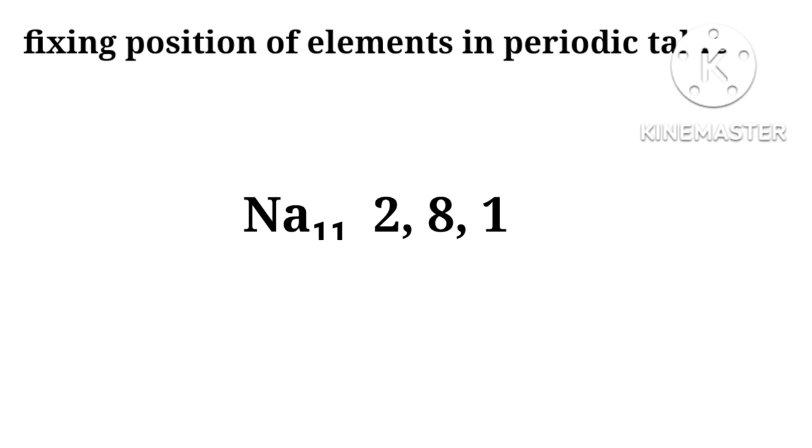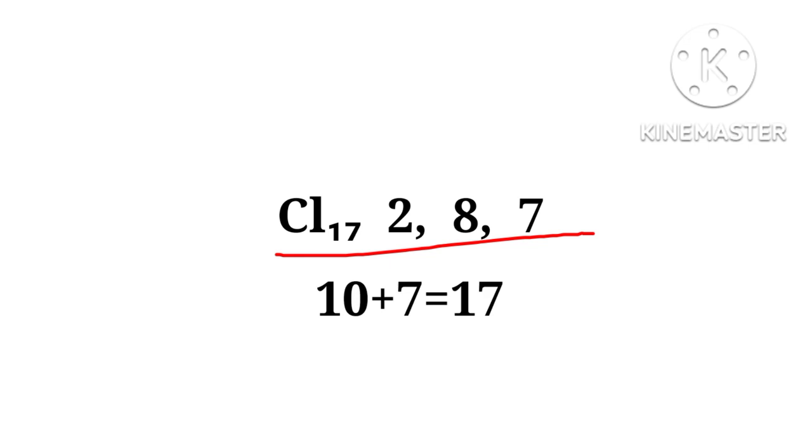Number of electrons present in the outermost orbit corresponds to the group it belongs to. Those having one and two in the last orbit belong to first and second group. Those having more than two, we add 10. For example, aluminum 2,8,3 has three electrons in the outermost orbit, therefore belongs to 10 plus 3 equals 13th group. Chlorine 2,8,7 belongs to 10 plus 7 equals 17th group.